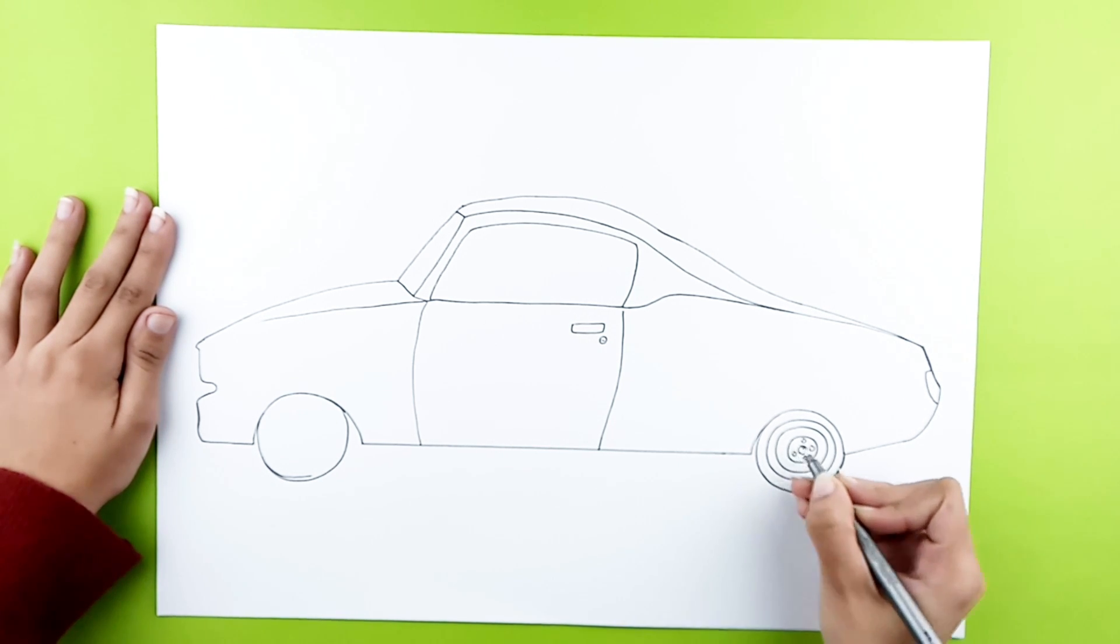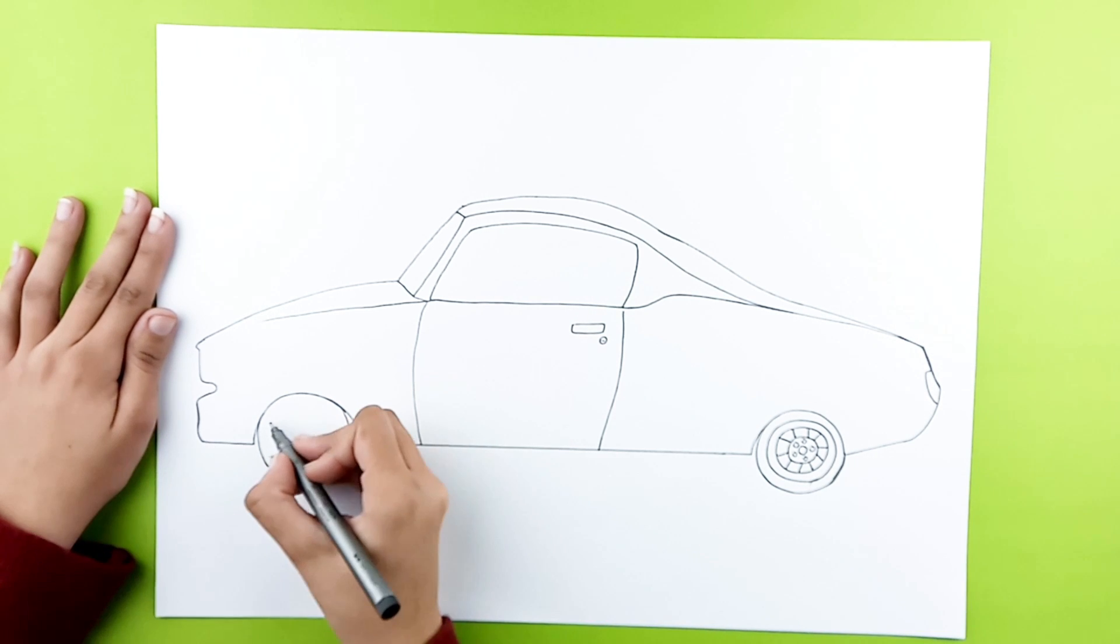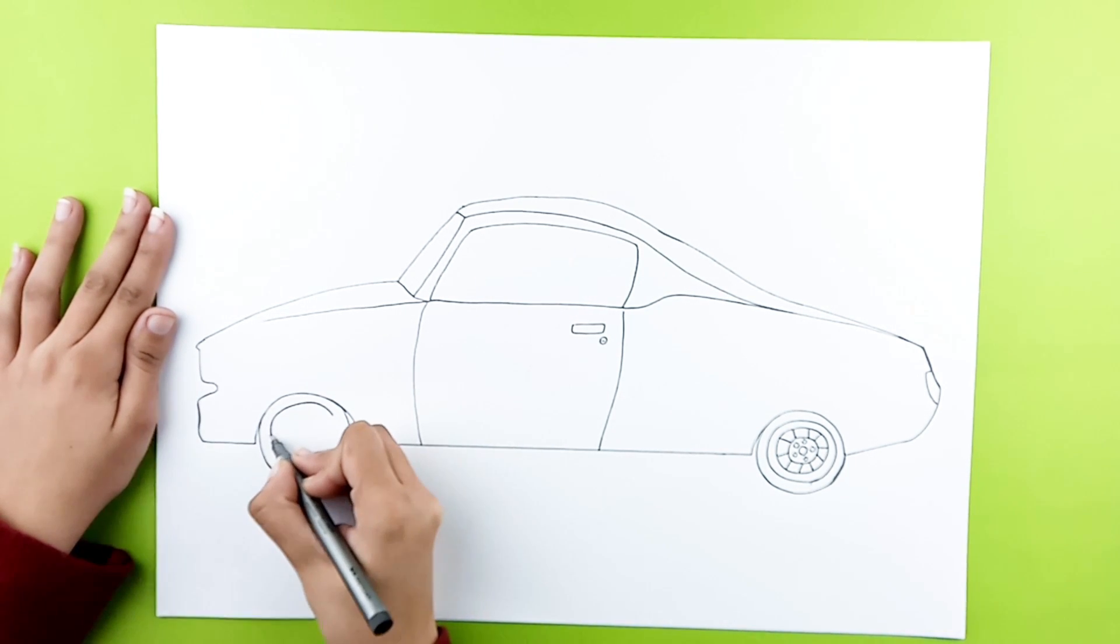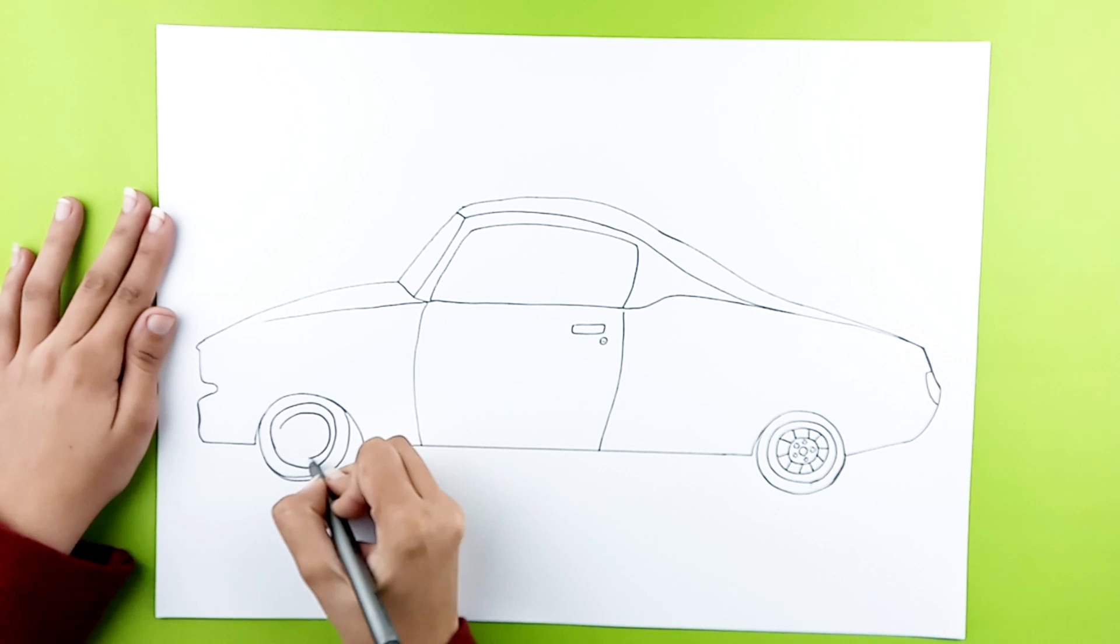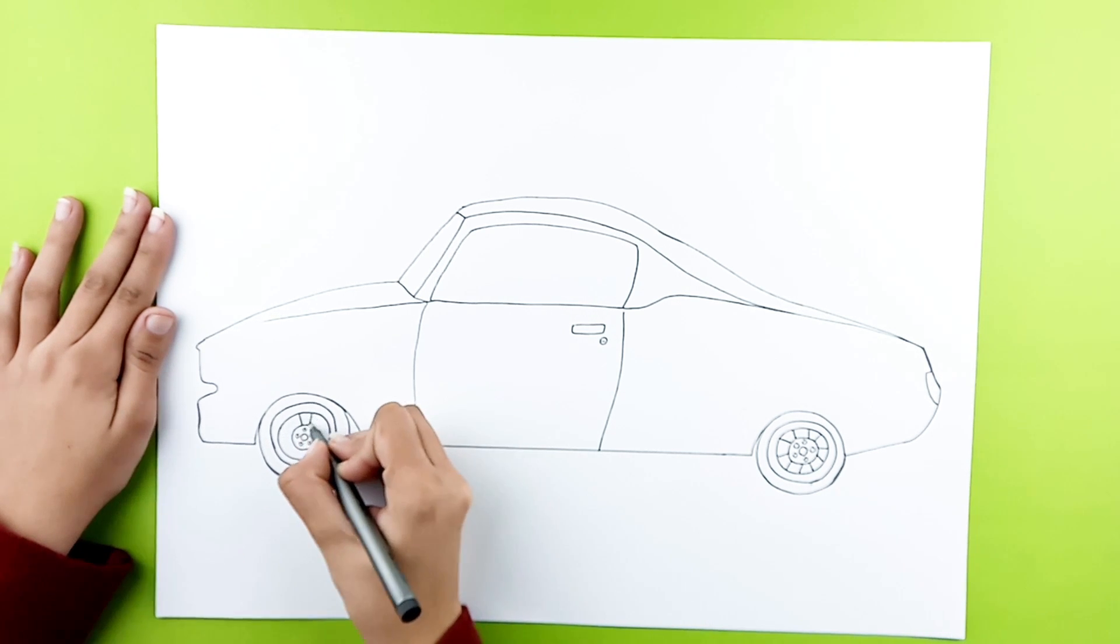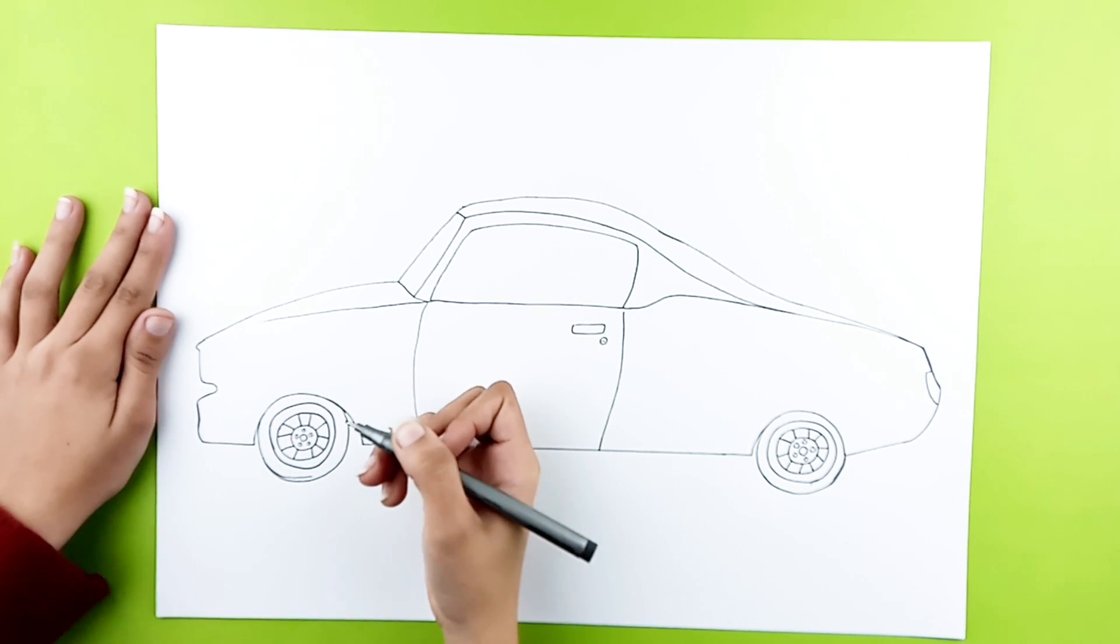Draw the details of the tires. And copy the same for the front wheel. Let's draw the lights.